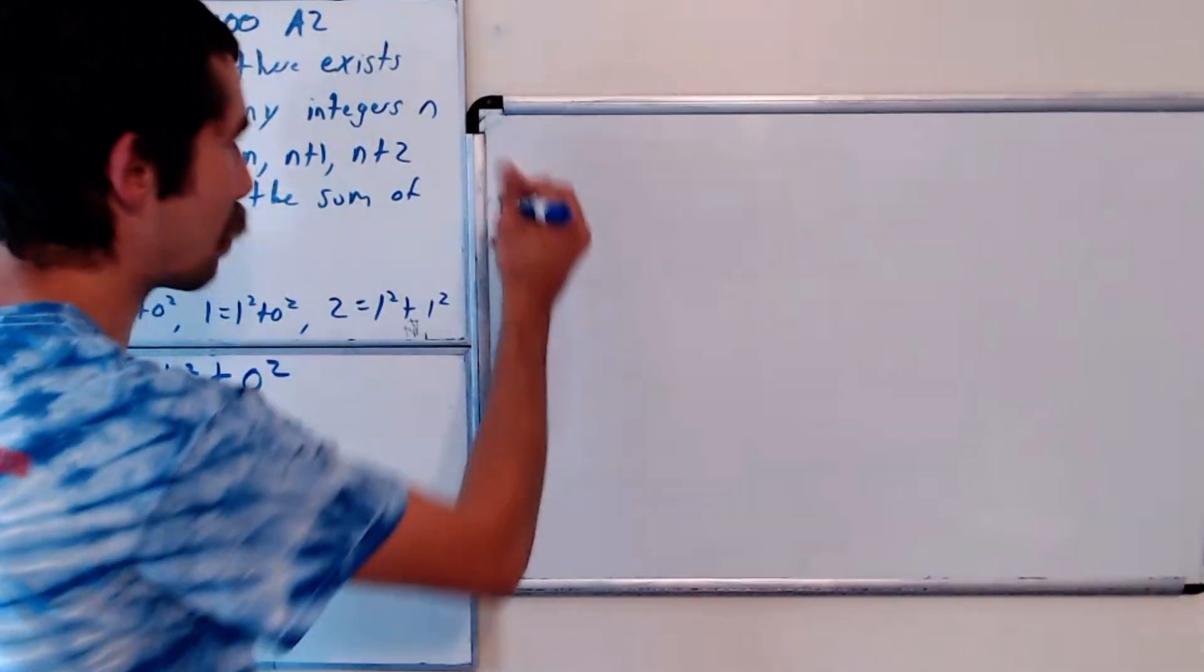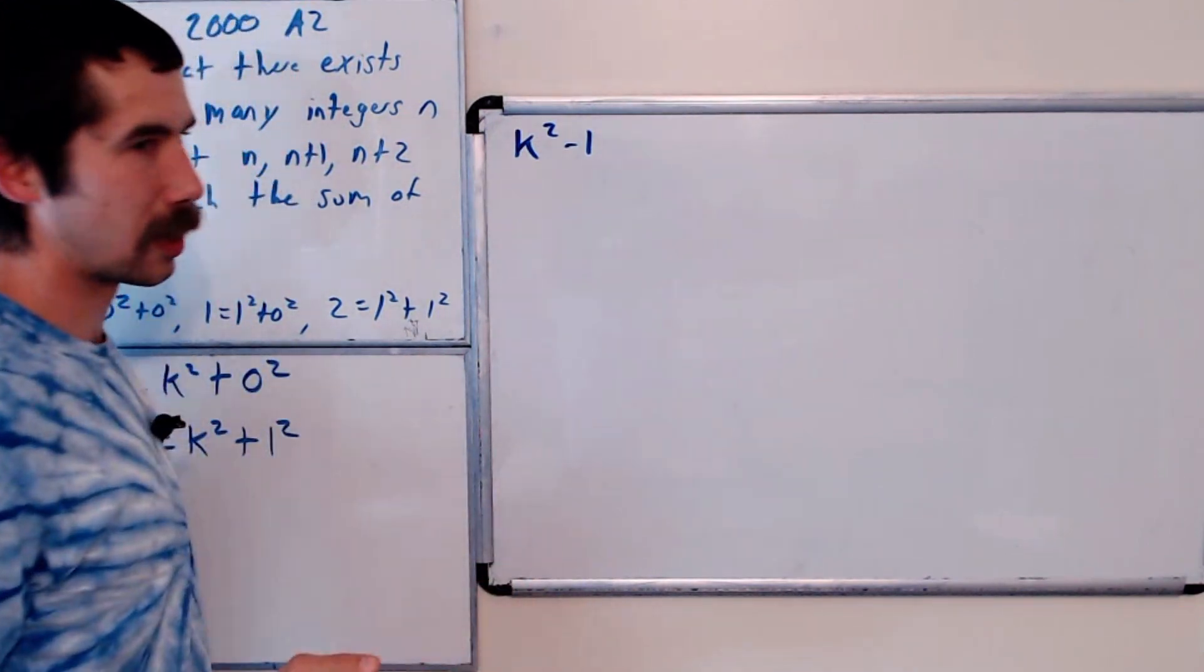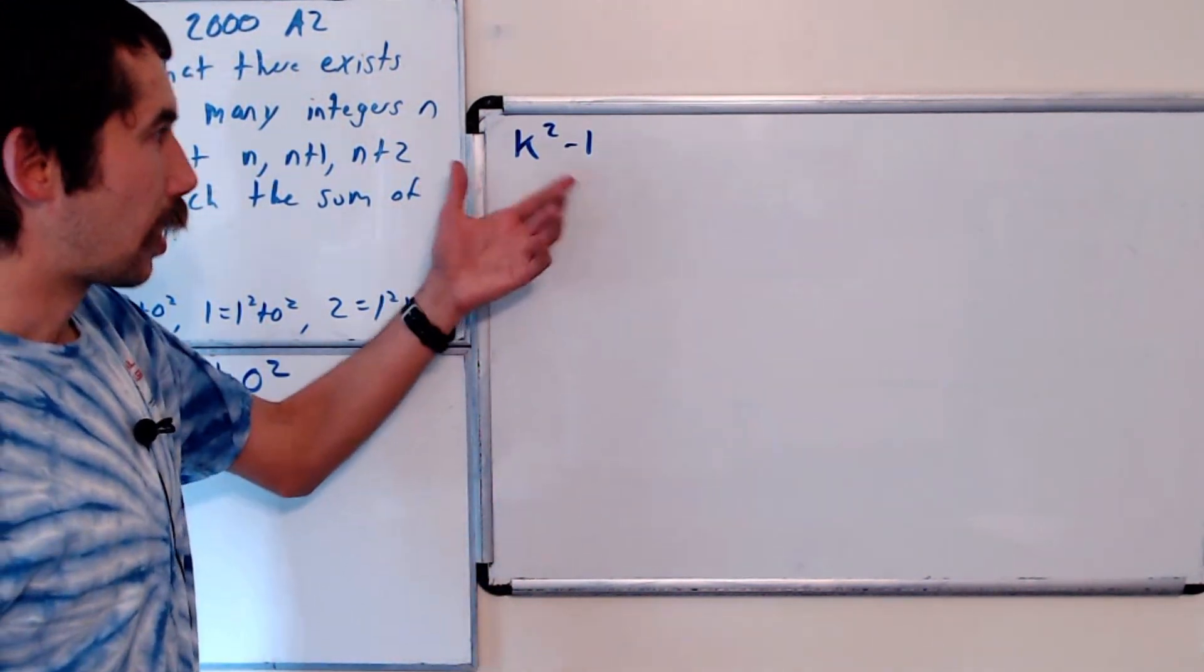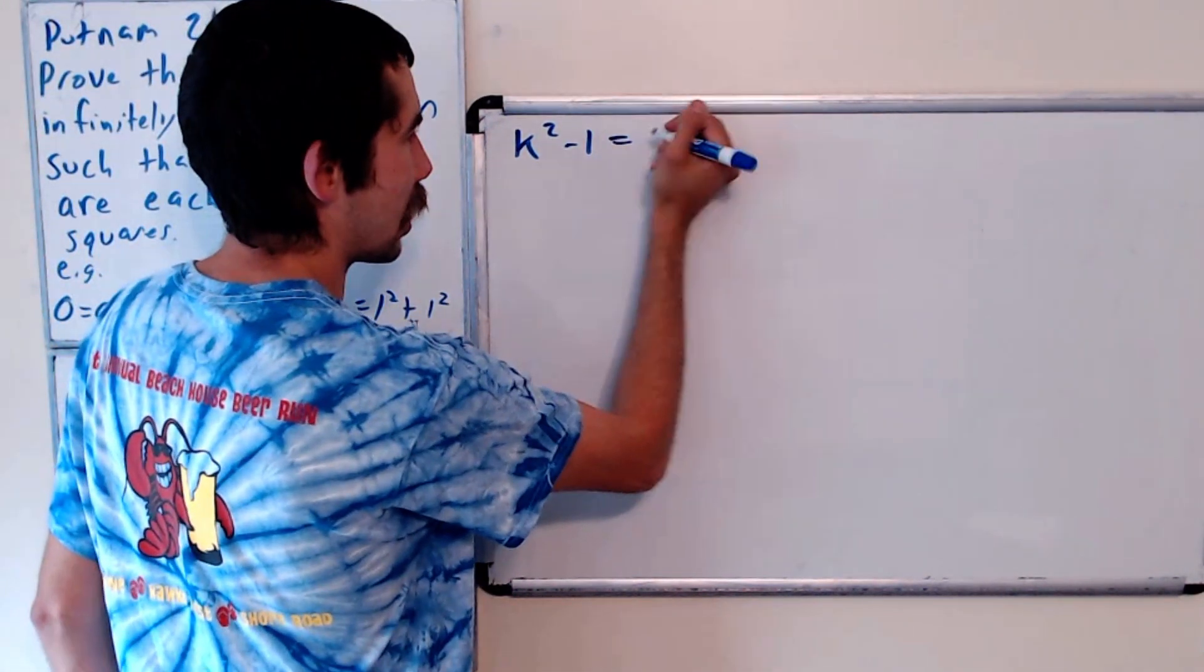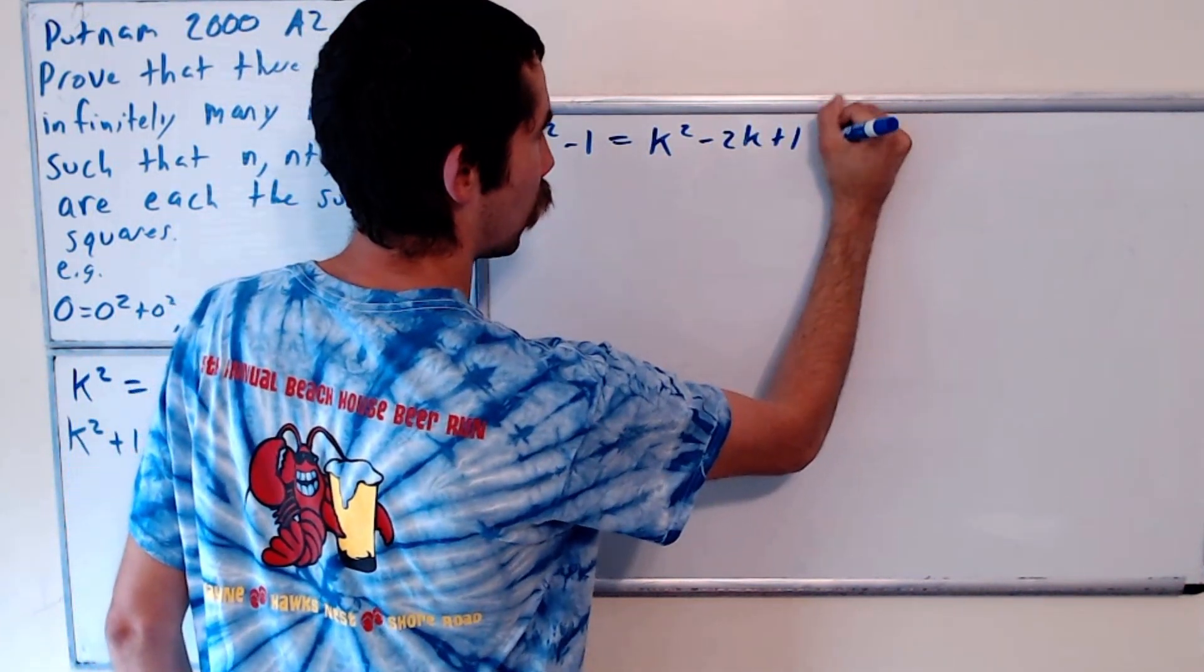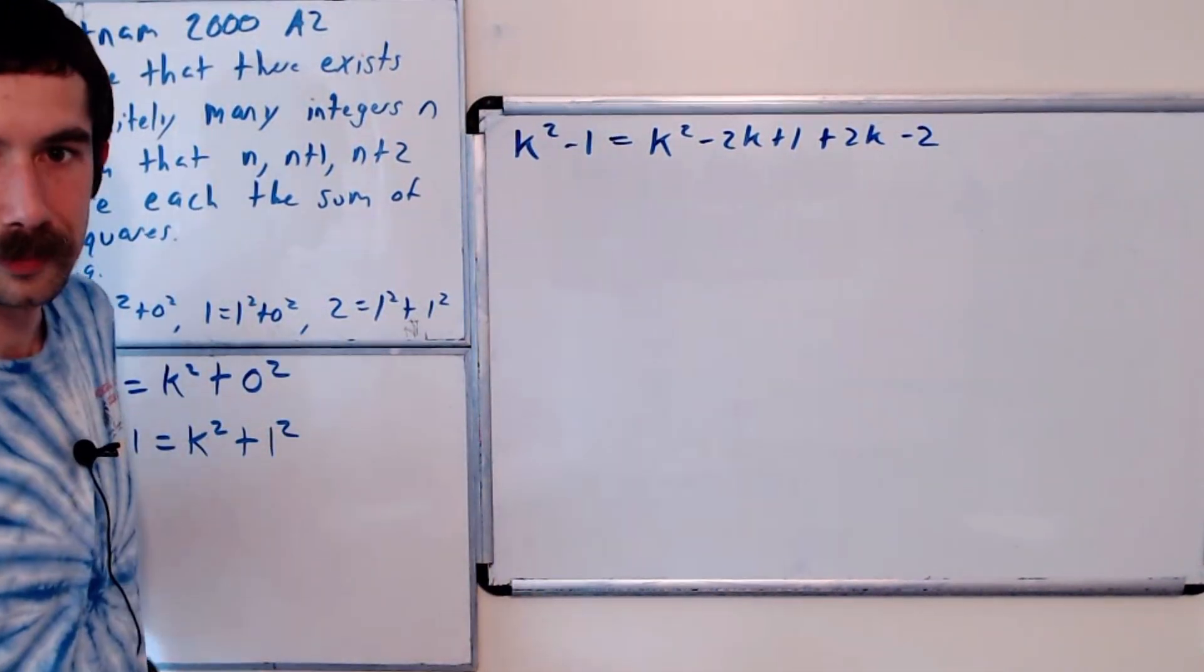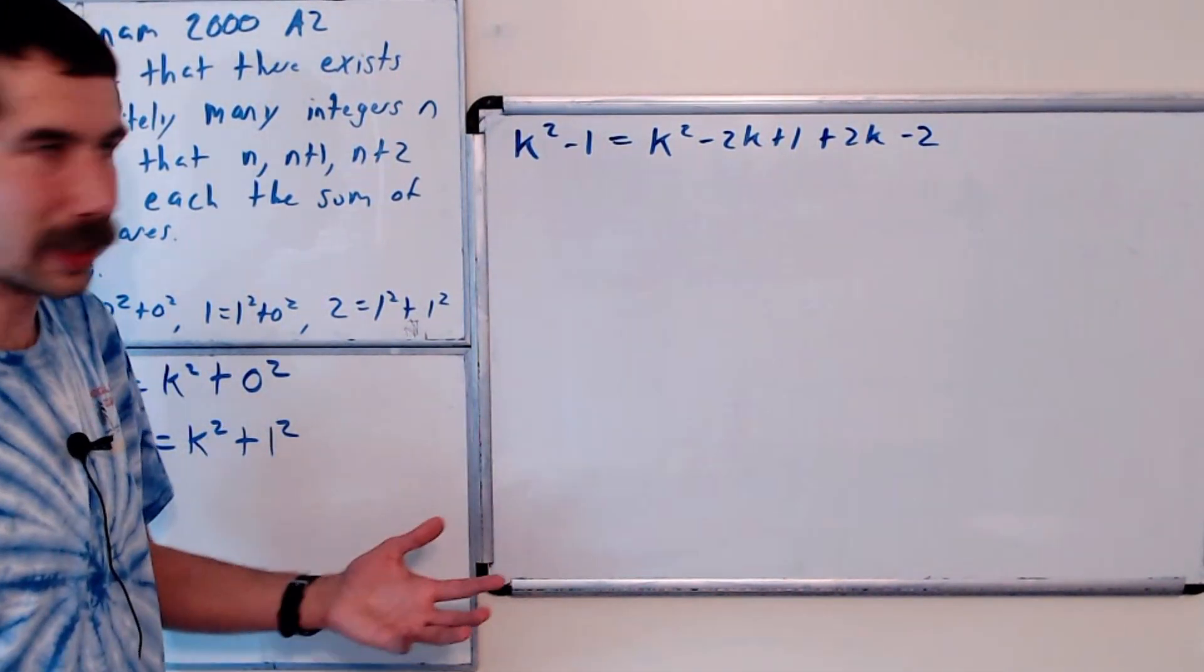So when is k squared minus 1 the sum of two squares? Well, k squared minus 1 we could rewrite as k squared minus 2k plus 1 plus 2k minus 2. Why are we doing that?